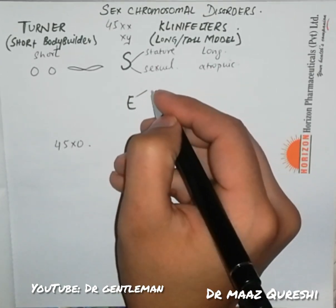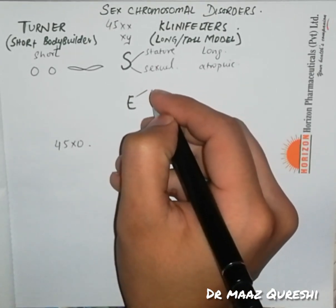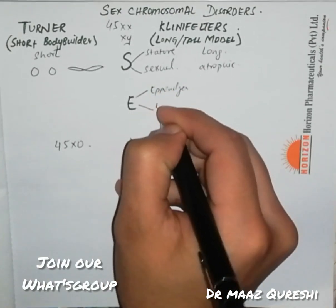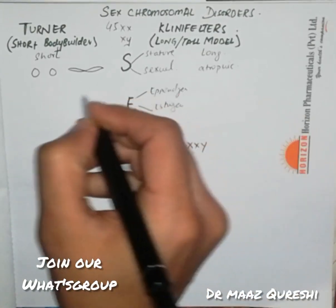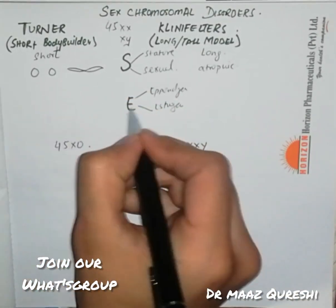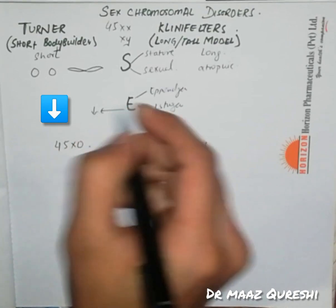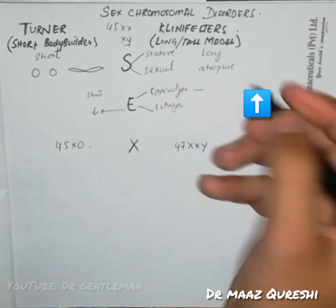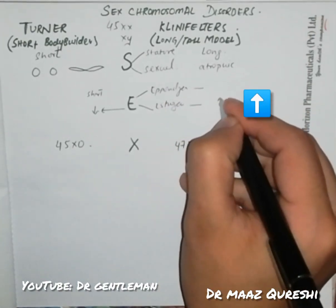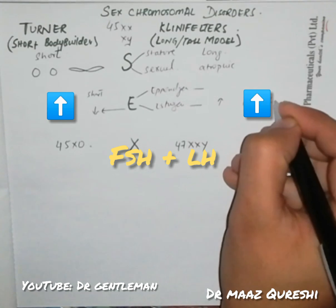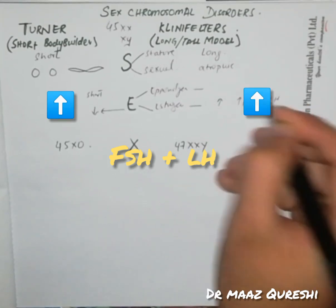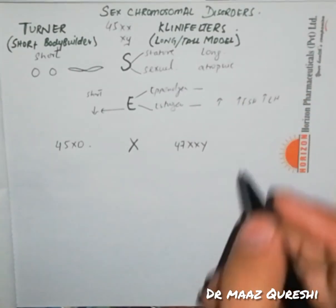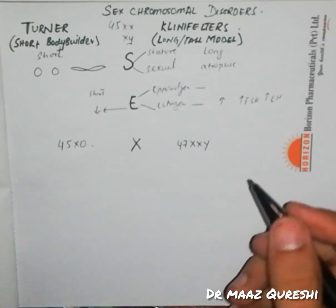Starting with appendages and estrogen: in Turner's, estrogen is low and appendages are short. In Klinefelter's it is the opposite — estrogen is high. However, in both conditions FSH and LH would be high.